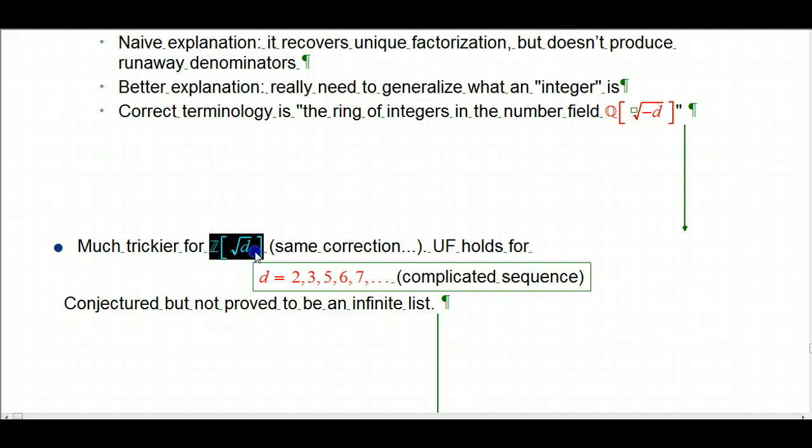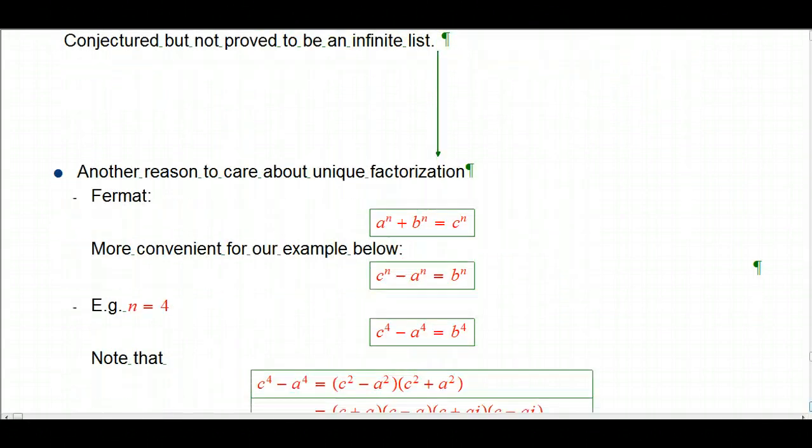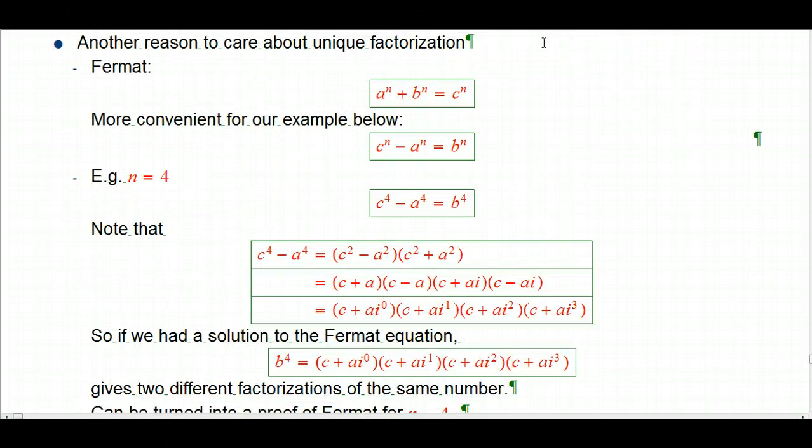Similarly, when I say Z adjoined root D, with D as a positive number, and we don't use complexes, it's really the same correction. I really should be saying the ring of integers in what's called a number field. So, I wanted to really close out though, with a rather different case, another reason to care about unique factorization. It's a really important story, in many cases, and it's really one of the big genesis of algebraic number theory in the last half of the 19th century. And that's good old Fermat. Let's look at Fermat's last theorem.